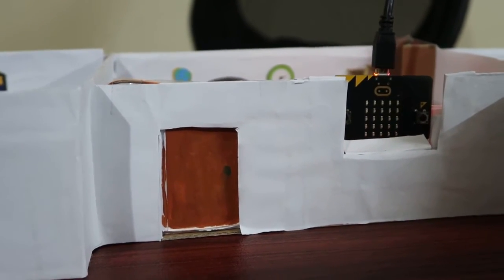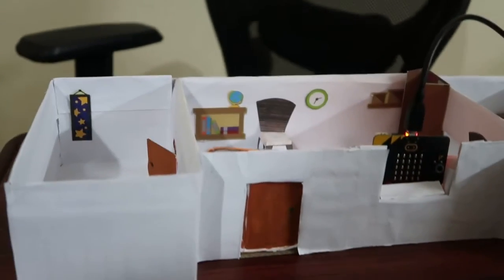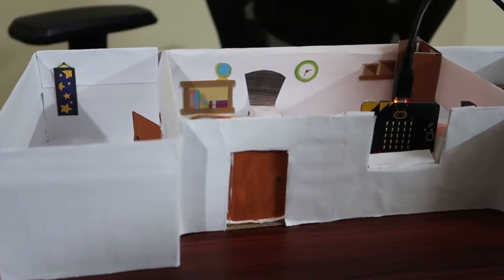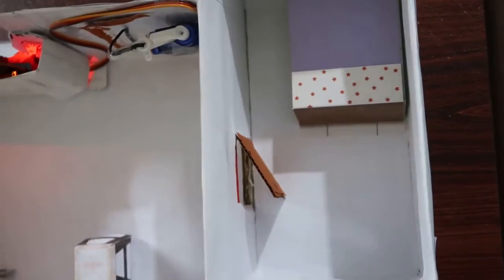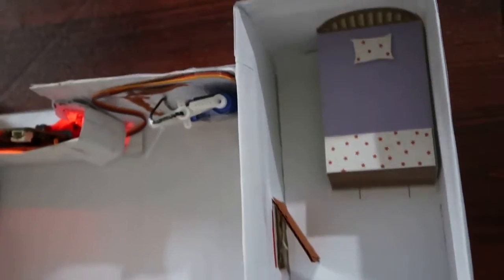So the project would normally consist of 3 microbits but for demonstration purposes I am showing only one. So there will be one microbit in the bedroom and one microbit in the study room. The microbit in the bedroom and the study room will be equipped with motion detectors, smoke detectors, servos and motor fans.